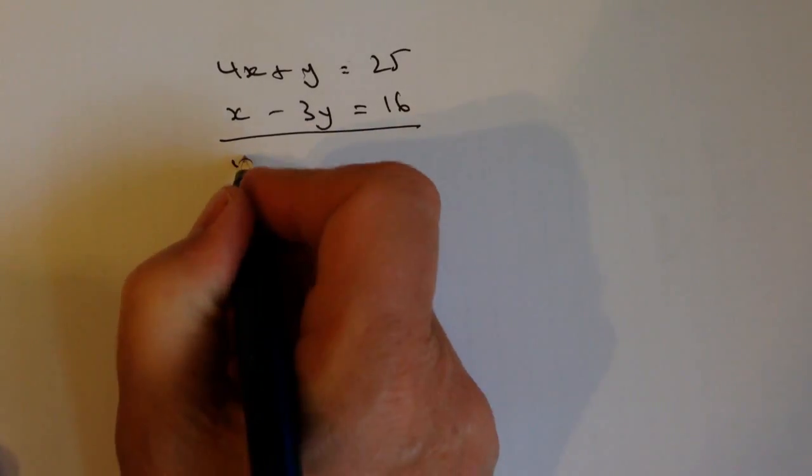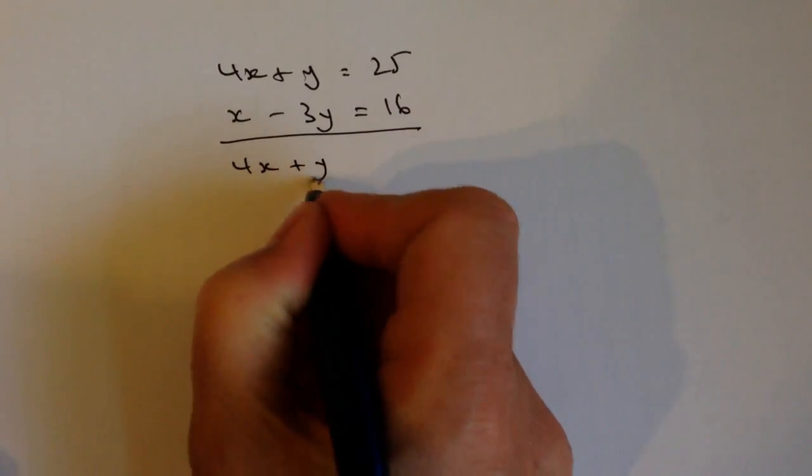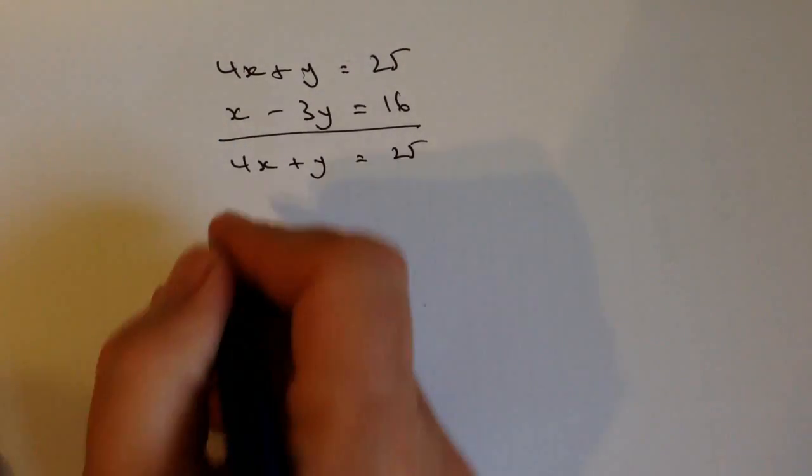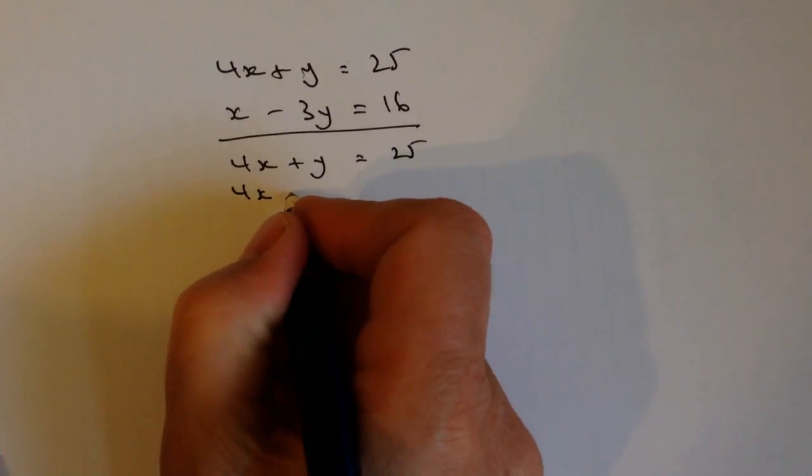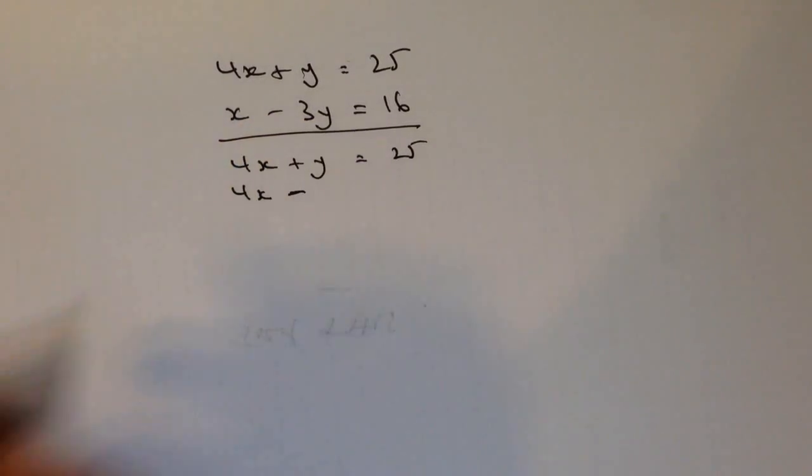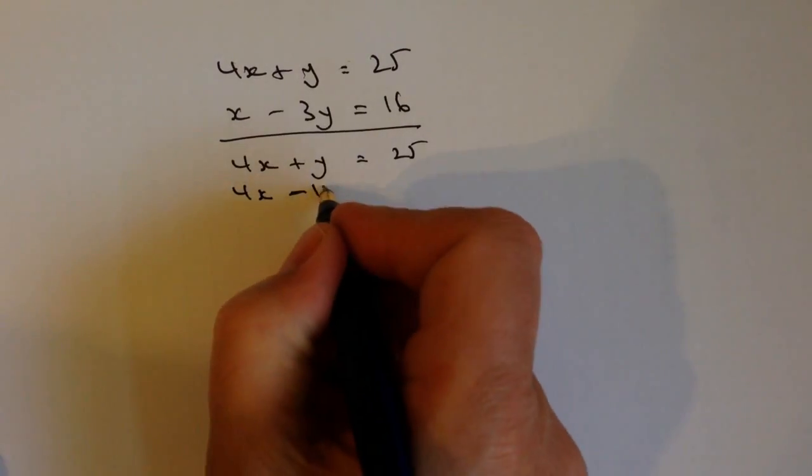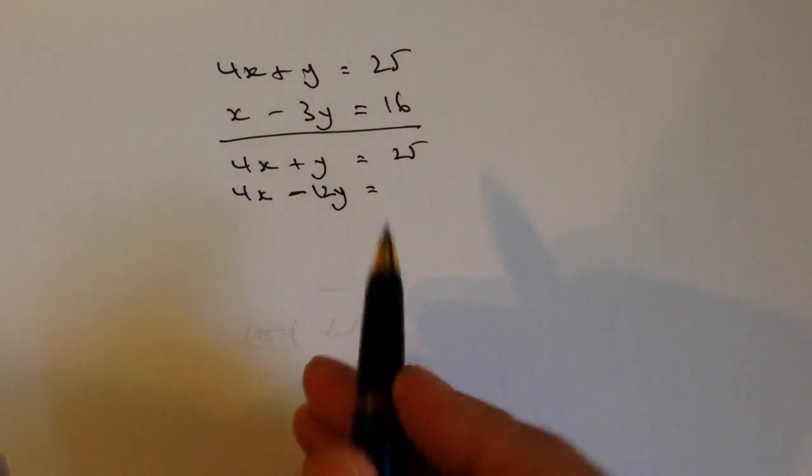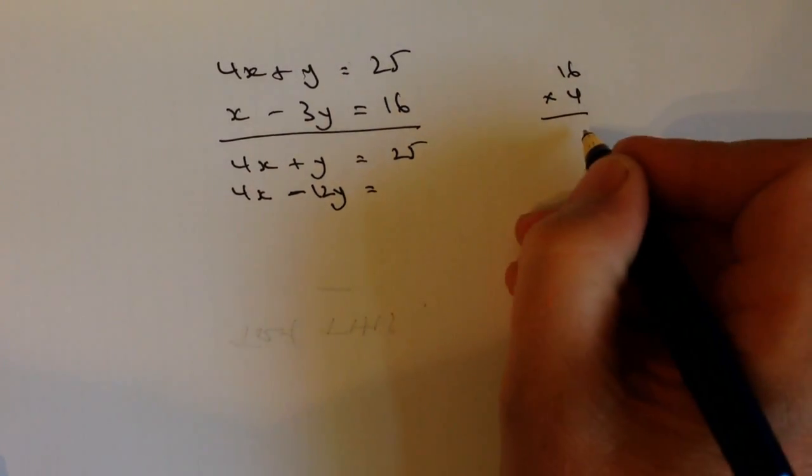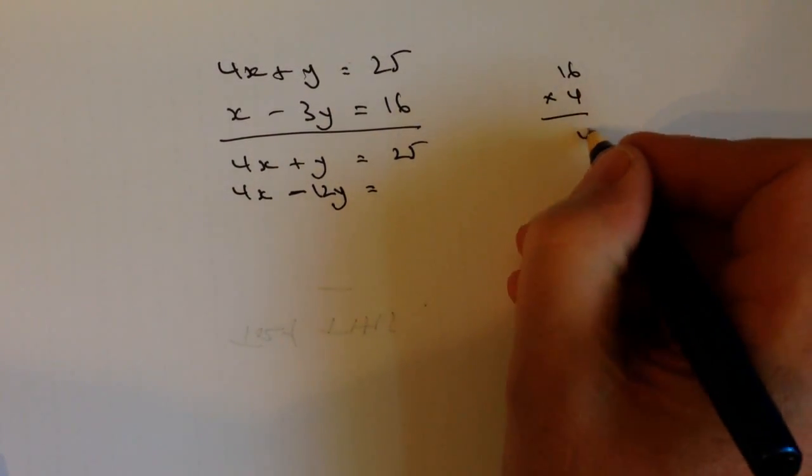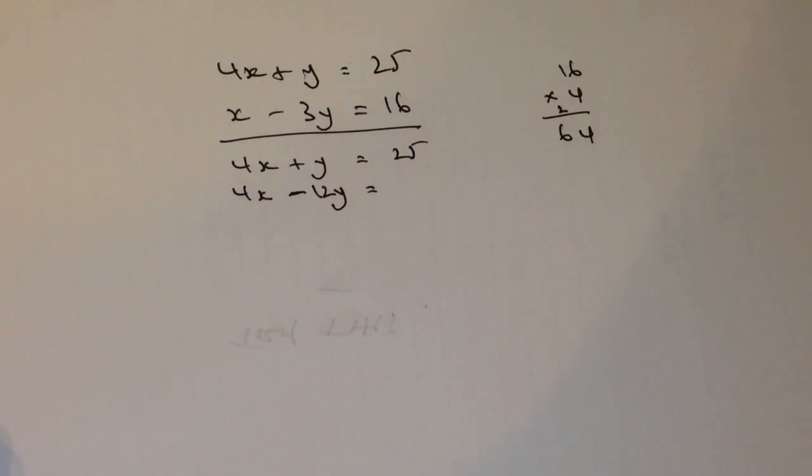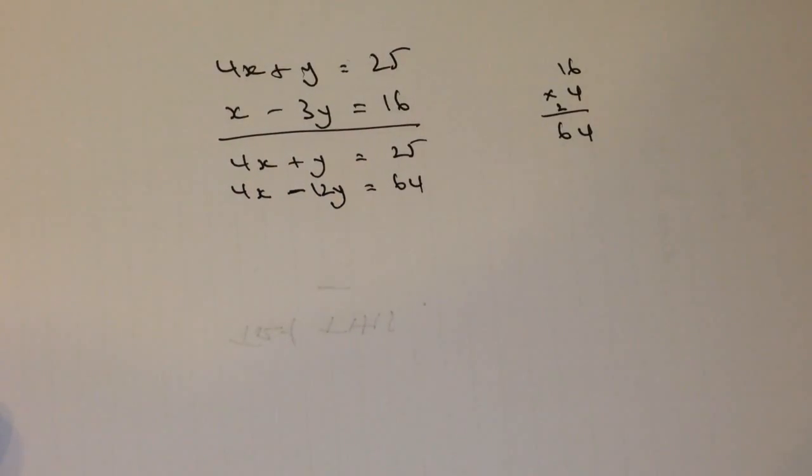So to do that, I'm going to get the top equation won't change. That's going to stay the same. The second equation, however, is going to become 4x and this is minus 12y. So I've got minus 3y times 4 is going to be minus 12y and that equals 16 times 4. Well, 16 times 4 is going to be 6, 4 is a 24, 2 to carry, 4 is a 4, 64. So I've got 64 in there.